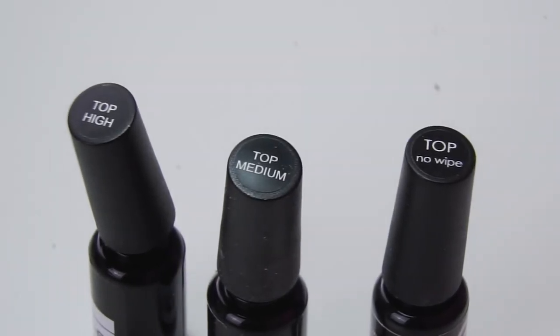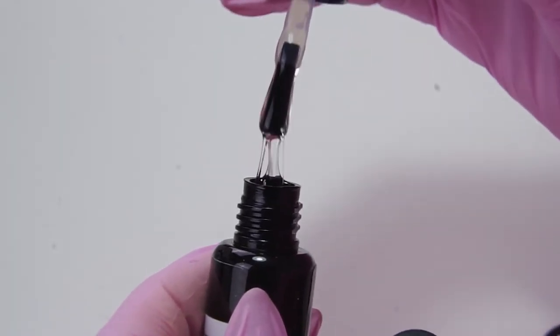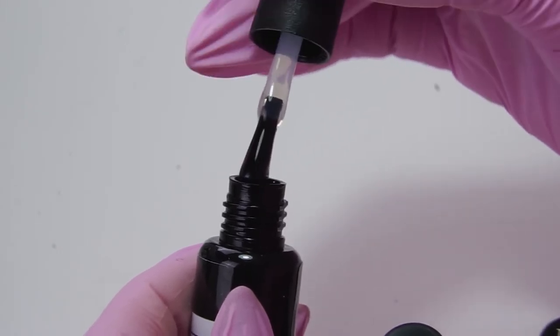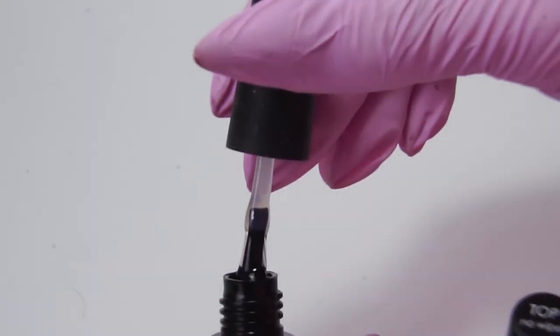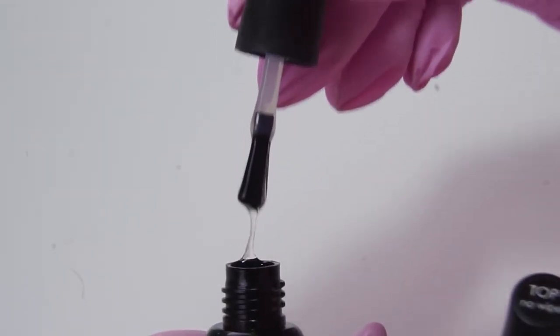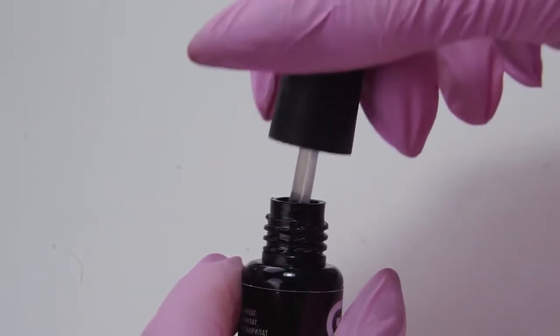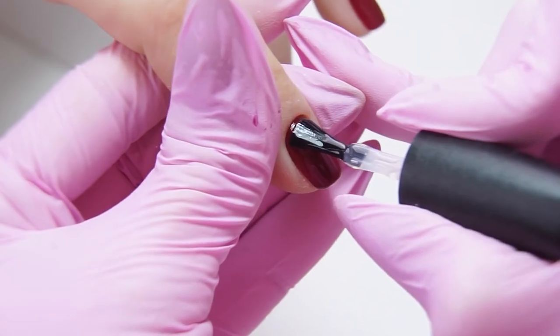Top coats also vary in thickness. A very thick top easily covers any design: glitter, sliders, stamping. It's not so easy to spread on a regular coating. The top coat, medium in consistency, will suit beginners. Liquid consistency of the top gives a beautiful shine and a quick and smooth highlight. I'm applying the top coat as I did the second color coat.